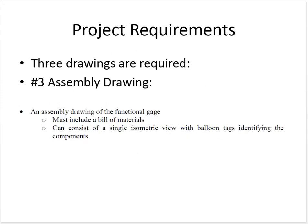Finally, the last drawing I need is an assembly drawing. The assembly drawing can be pretty simple, but you must include a bill of materials. It should be pretty simple because we have three pins and one gauge body. The purpose of the assembly drawing is to show how the pins go into the gauge body. This drawing can be as simple as a single isometric view using balloon tags to identify the components and then the parts list. I hope this helps.